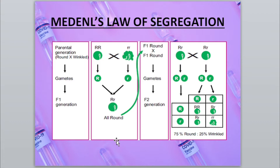Before starting his experiments, Mendel used plants with a homozygous genotype — referred to as true breeding — in which both alleles are the same, either both dominant or both recessive. Mendel not only selected the pea plant correctly but also applied the correct proportion of statistics, which made his laws successful. A monohybrid cross is one in which only one characteristic is studied at a time — for example, seed shape.